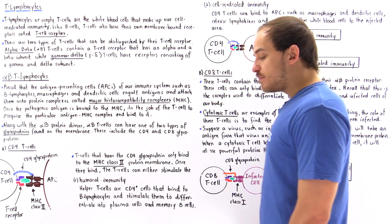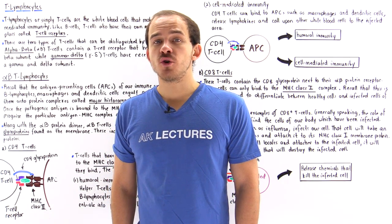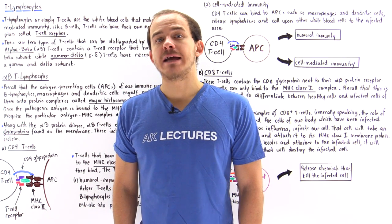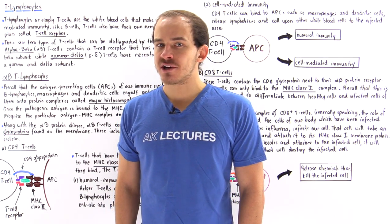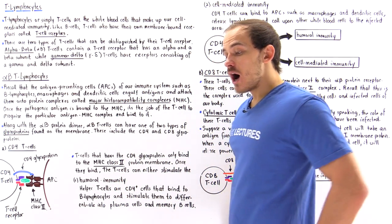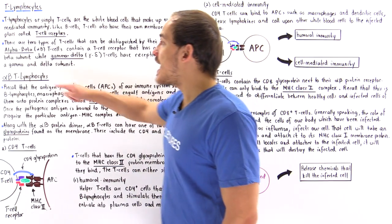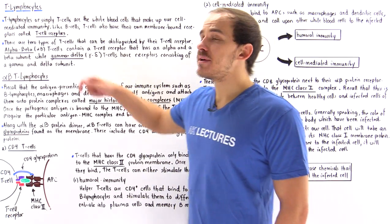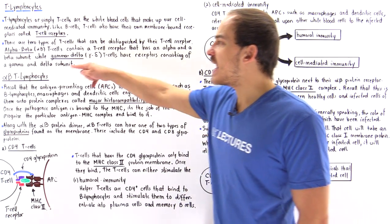Now just like B cells, T cells also have special receptors on the membrane we call T cell receptors. Because there are two different types of T cell receptors, we categorize T lymphocytes into two categories. We have alpha-beta T cells, which consist of special T cell receptors that have an alpha and a beta polypeptide subunit, and we also have gamma-delta T cells, which contain T cell receptors that consist of a gamma and a delta polypeptide subunit.